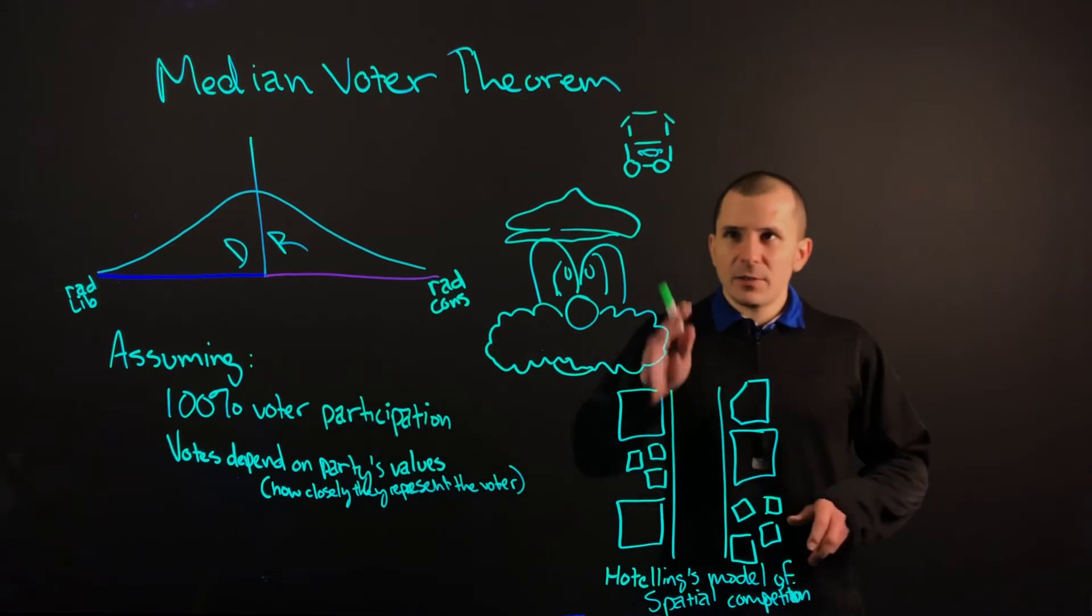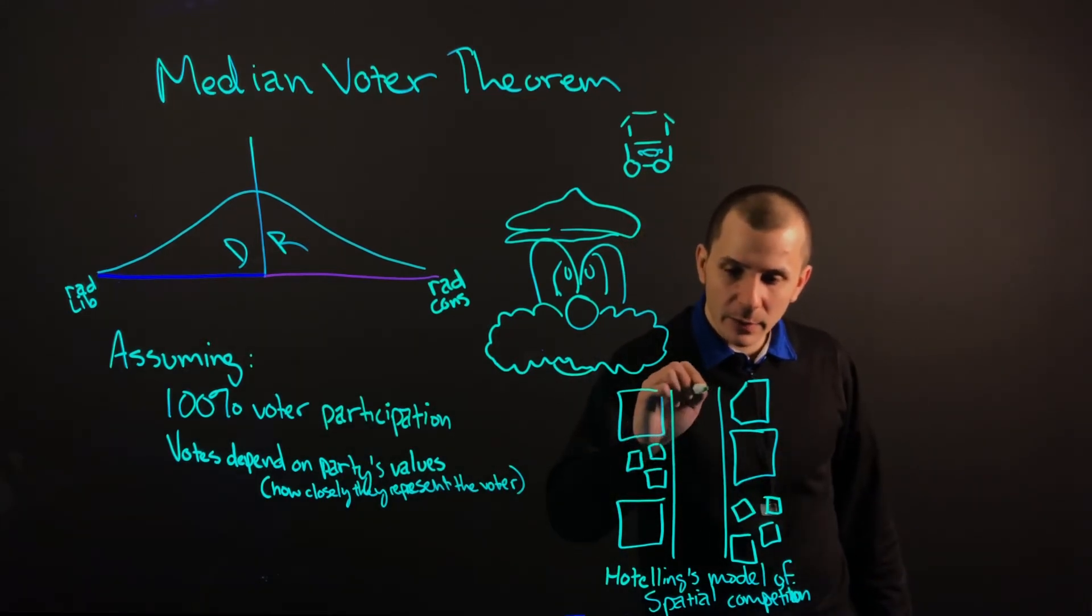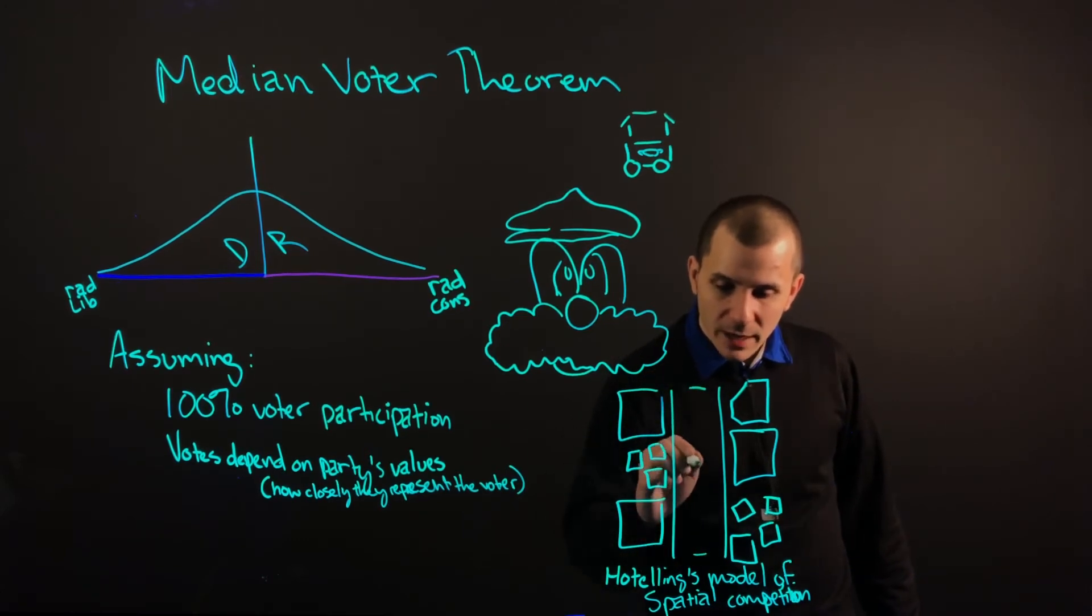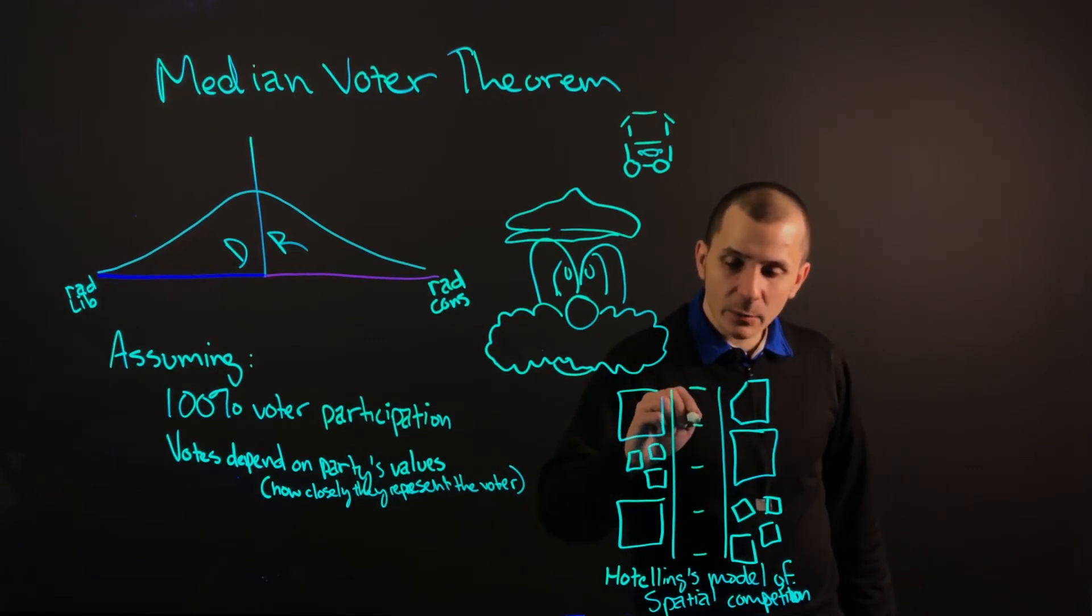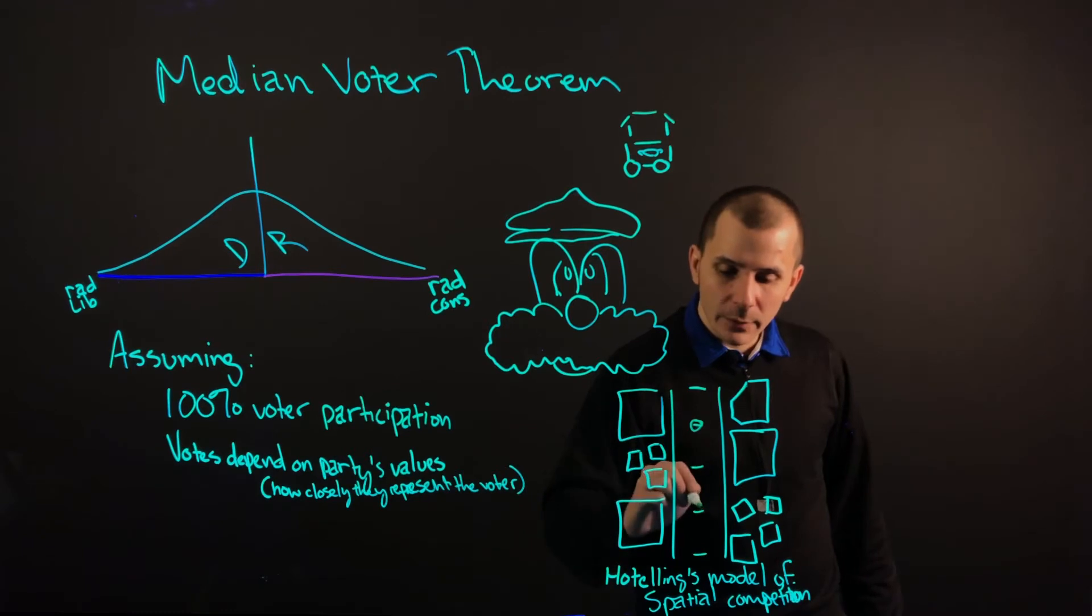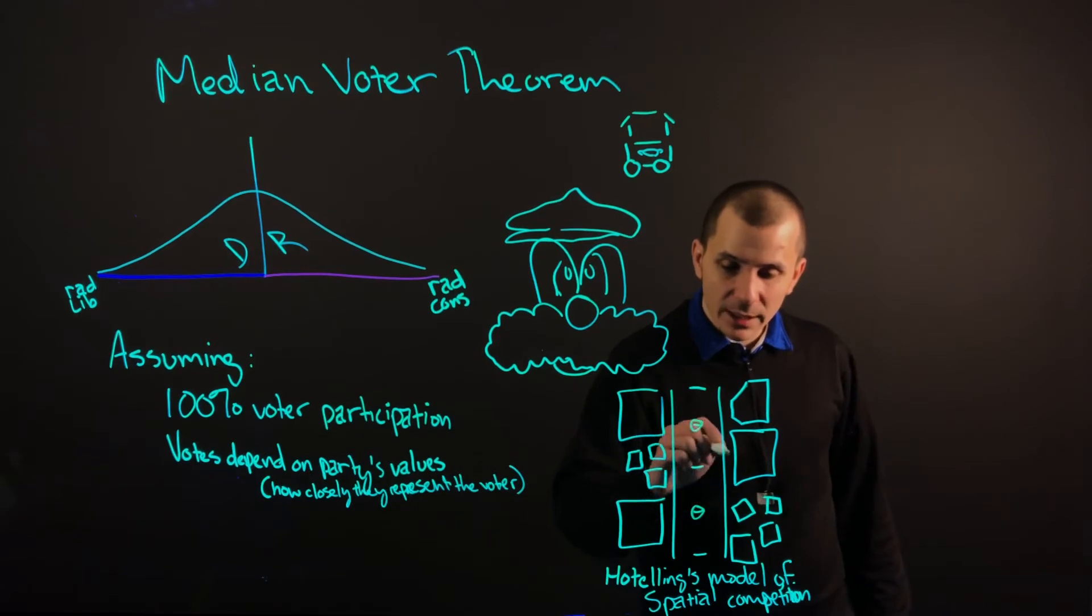So imagine that we have two hot dog carts. We have the end of the road here, the end of the road here, we have half of the way, and then we have 25% and another 25% here. We'll imagine we put one cart here and we put one cart here. This would be a socially optimal solution where everybody is able to get a hot dog at the easiest distance possible for them, and this means that the competition is split down the middle.